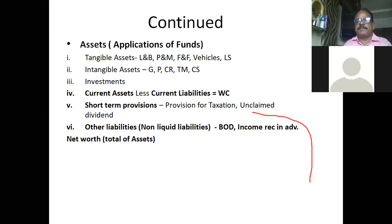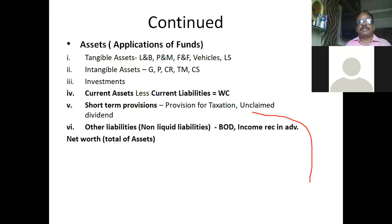Intangible assets are those which we cannot see or touch — goodwill, patents, copyrights, trademarks, and computer software. Goodwill we cannot see, patents we cannot see, copyrights we cannot see, trademarks and computer software we also cannot see. So whatever the total of tangible assets — say land and building total is 5 lakhs — and intangible assets become 1 lakh, so the total fixed assets become 6 lakhs.